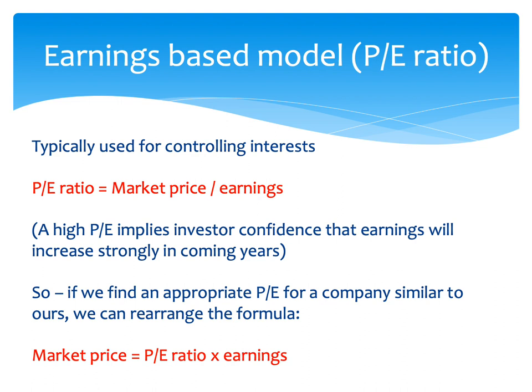If you are an unlisted company and want to value yourself, what you would do is find a similar company that is listed, take its PE ratio, and use that to figure out your market value. You just rearrange the formula: the market price of your unlisted company equals the PE ratio of the similar listed company multiplied by your earnings.